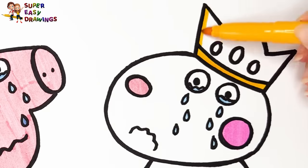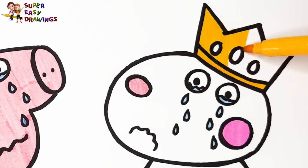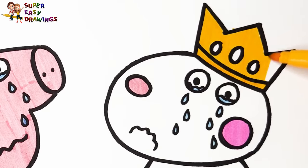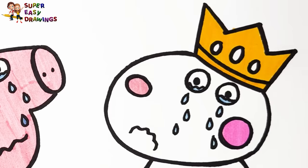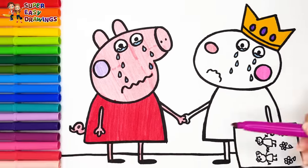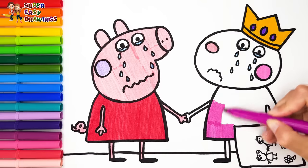I paint Susie's crown with yellow. Purple. For her dress I use pink.